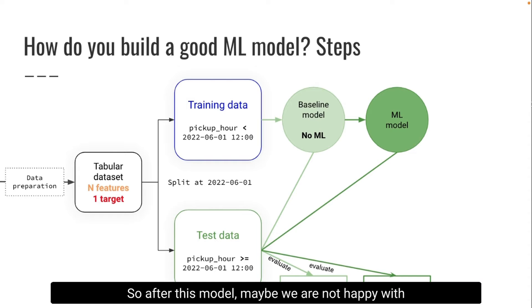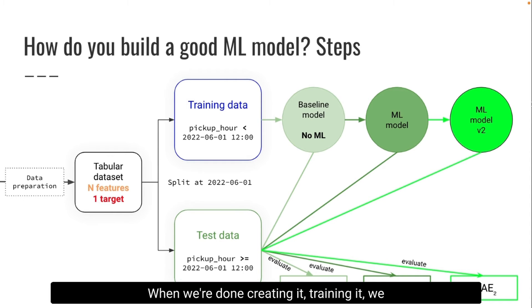And this process is something that you can keep iterating. So after this model, maybe we're not happy with the results and we go and we build a second version of that model. And again, we do the same. When we're done creating it, training it, we evaluate it using the test data and we get a new metric error. And well, it's not always good news. Sometimes you create a more complex model but you get actually worse results. So this is a very experimental process in which you are creating potentially better versions of your model, and again testing against the test data to see if that's actually working better for your dataset.